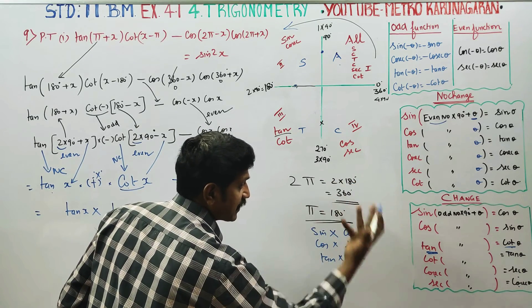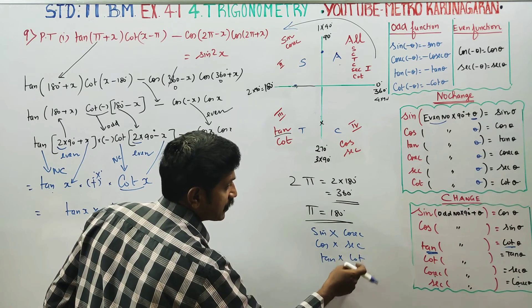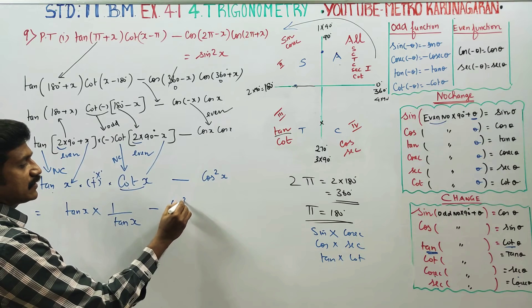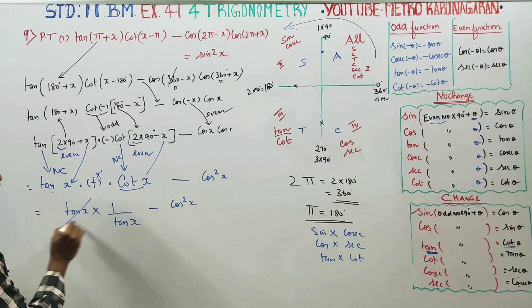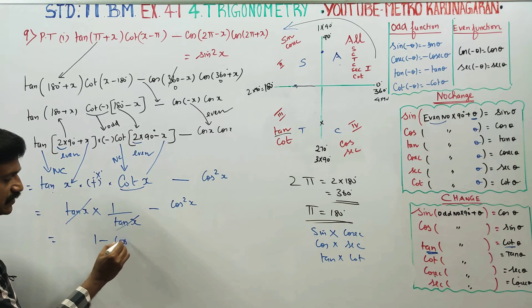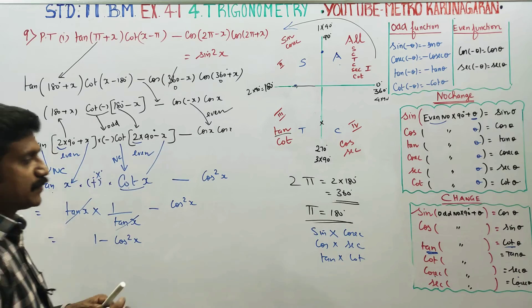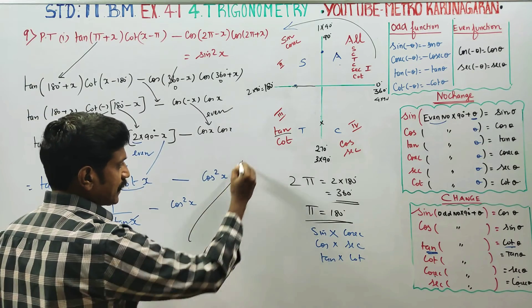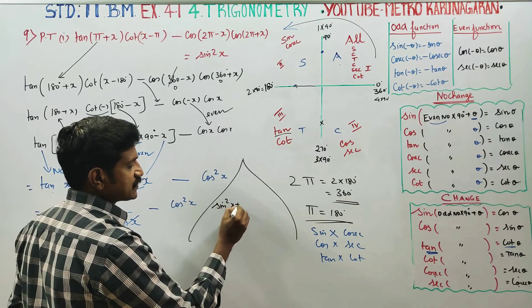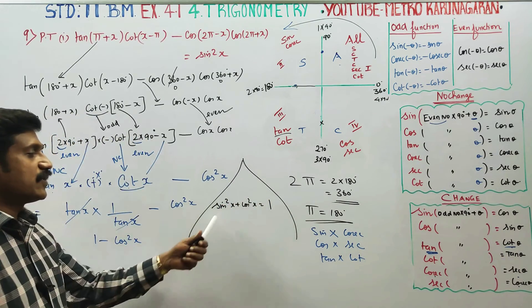1 by tan minus cos square x. This will cancel. 1 minus cos square x. 1 minus cos square x. If you take 10th standard, 1 minus cos square x is equal to 1 using the identity: sin square x plus cos square x is equal to 1. This is the formula.